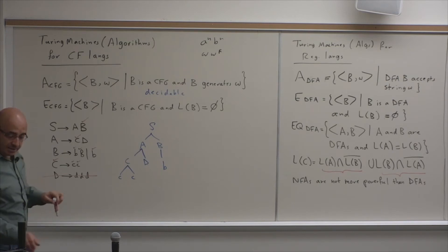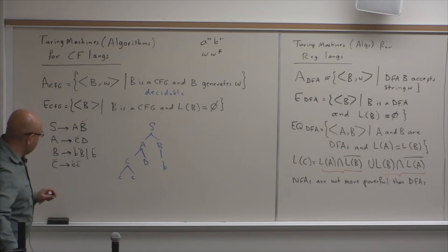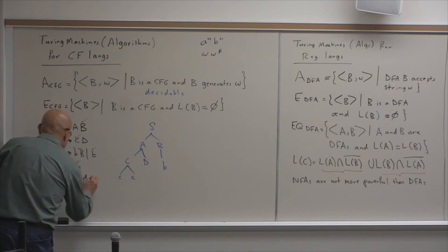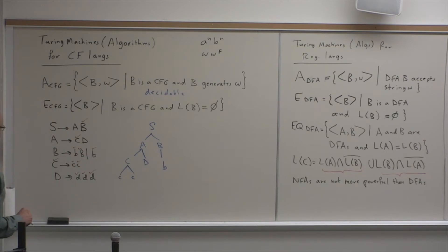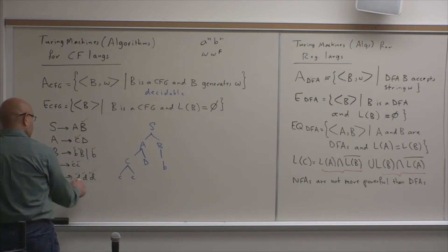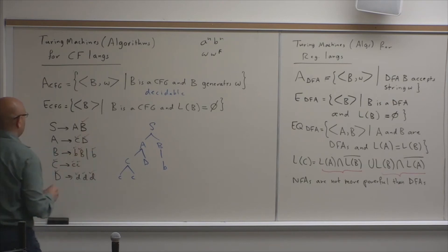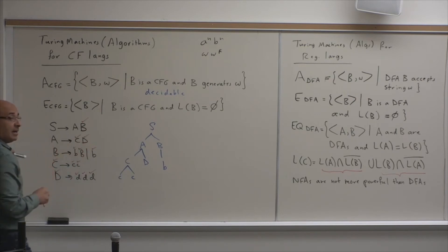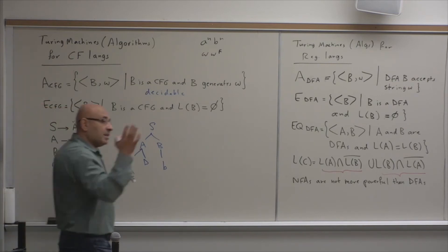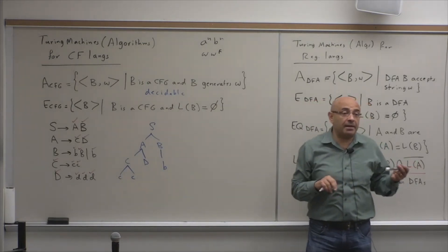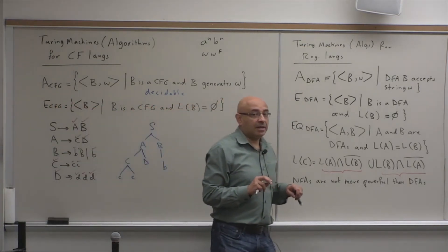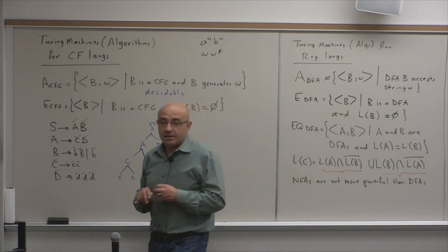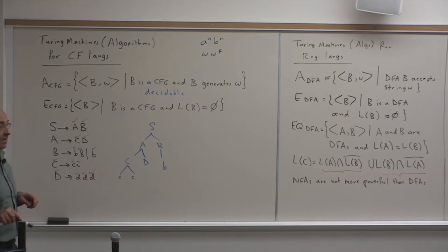If we add a definition for D, first mark the terminals. Then D is defined in terms of marked symbols, so mark D. Because C and D are both marked, mark A. Because A and B are marked, mark S. So it goes bottom-up from terminals all the way to the start variable. If there is a logical path from terminals to the start variable, then we can derive at least one string. If there is no such path, the language is empty.